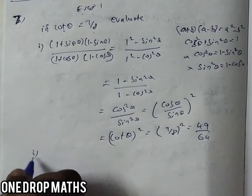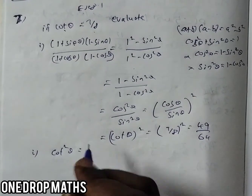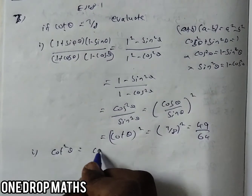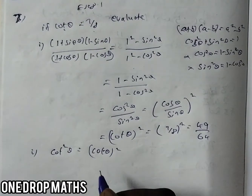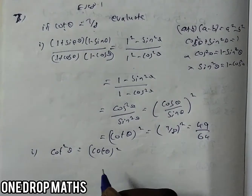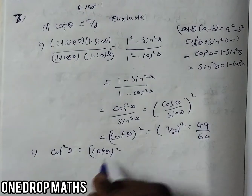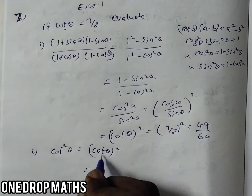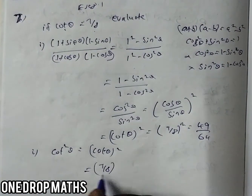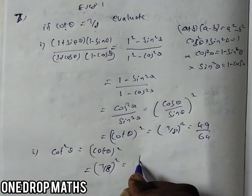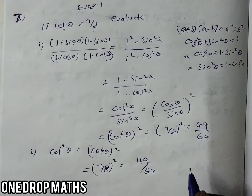For the second sub-question, they directly ask to find cos squared theta. We can write cos squared theta as (cos theta) the whole square. We know the value of cot theta is 7 by 8, so (7 by 8) the whole square becomes 49 by 64. So both answers are the same.